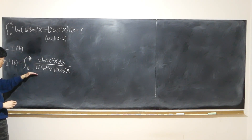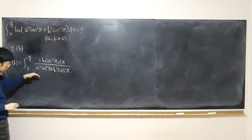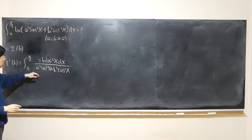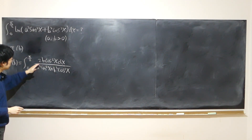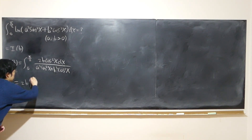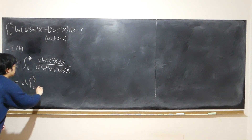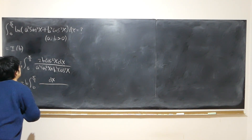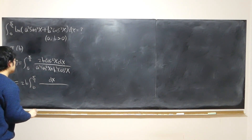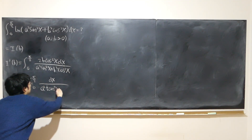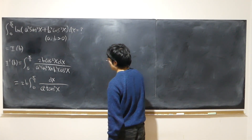This time we divide everything top and bottom by cos²x. So this is equal to 2b times the integral from 0 to π/2. We now have dx, with cos²x divided by sin²x giving tangent squared, so the denominator becomes a²tan²x + b².